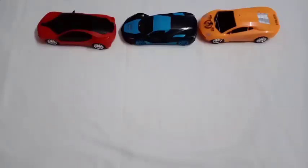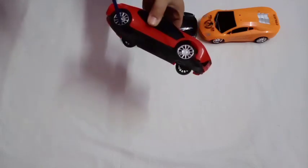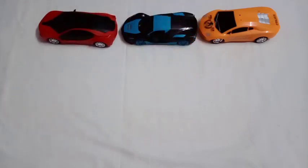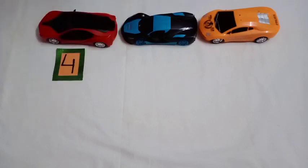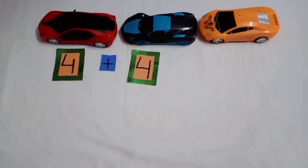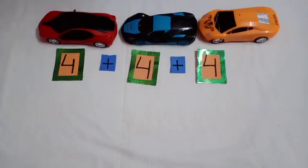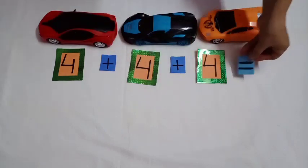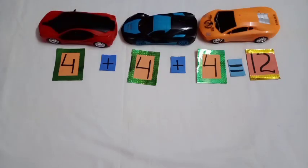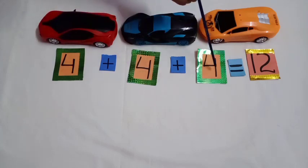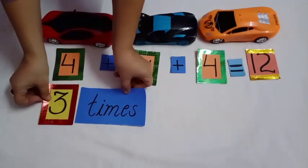They went by cars. They had three cars: one, two, three. Each car has four wheels: one, two, three, four. See students, four and four is eight, and eight and four is equal to twelve wheels. See students, how many times is there four? One, two, three. So we can say three times four.